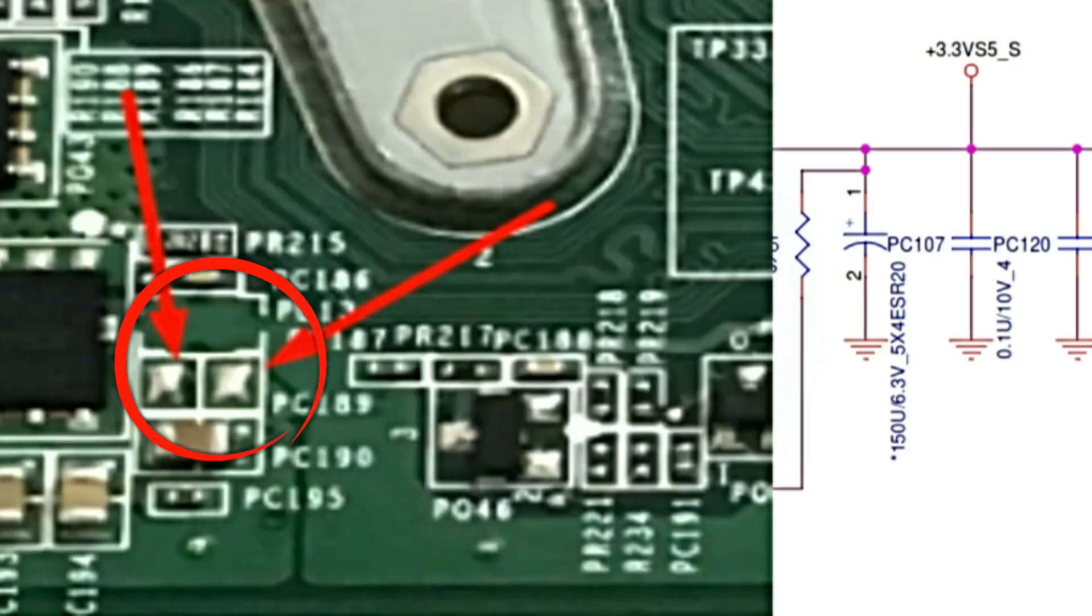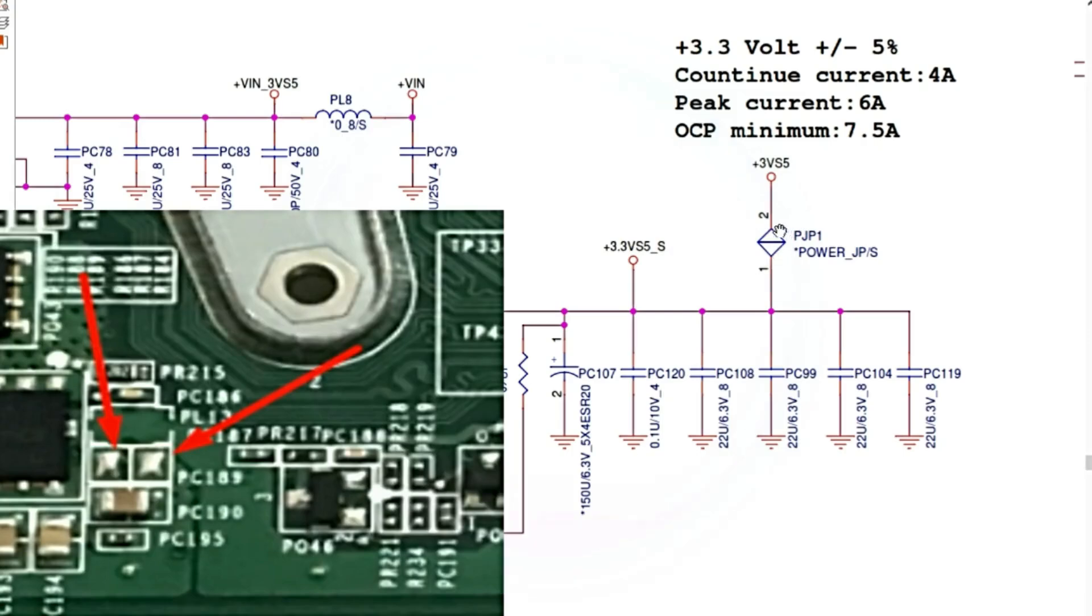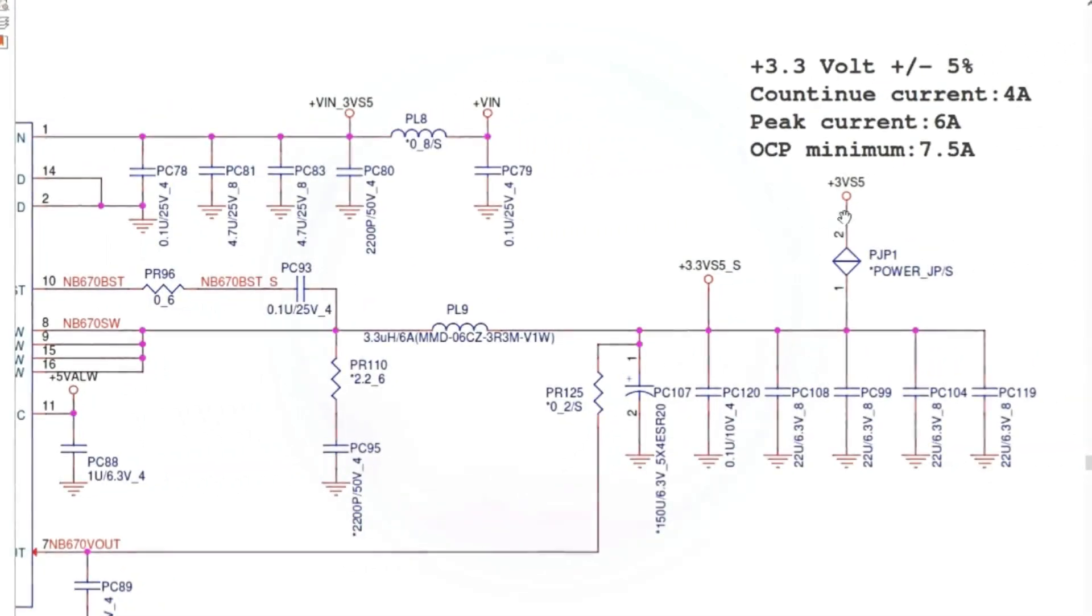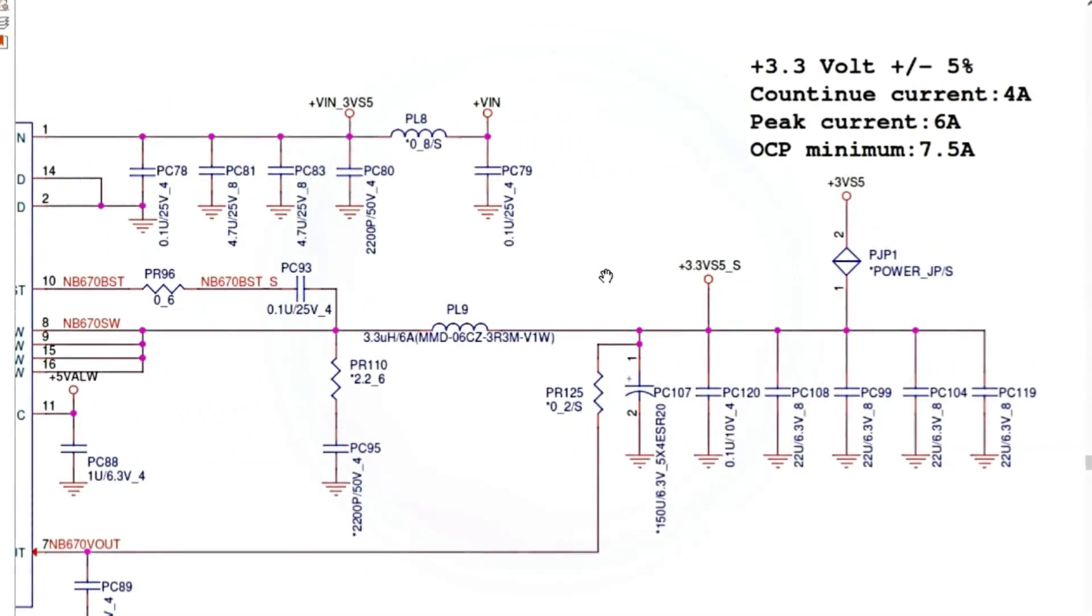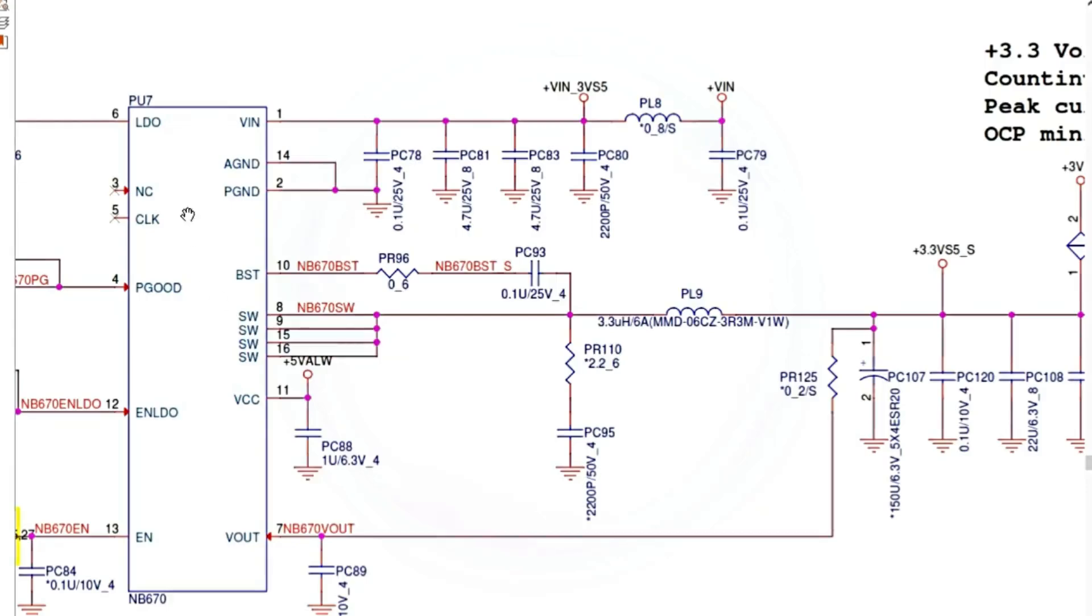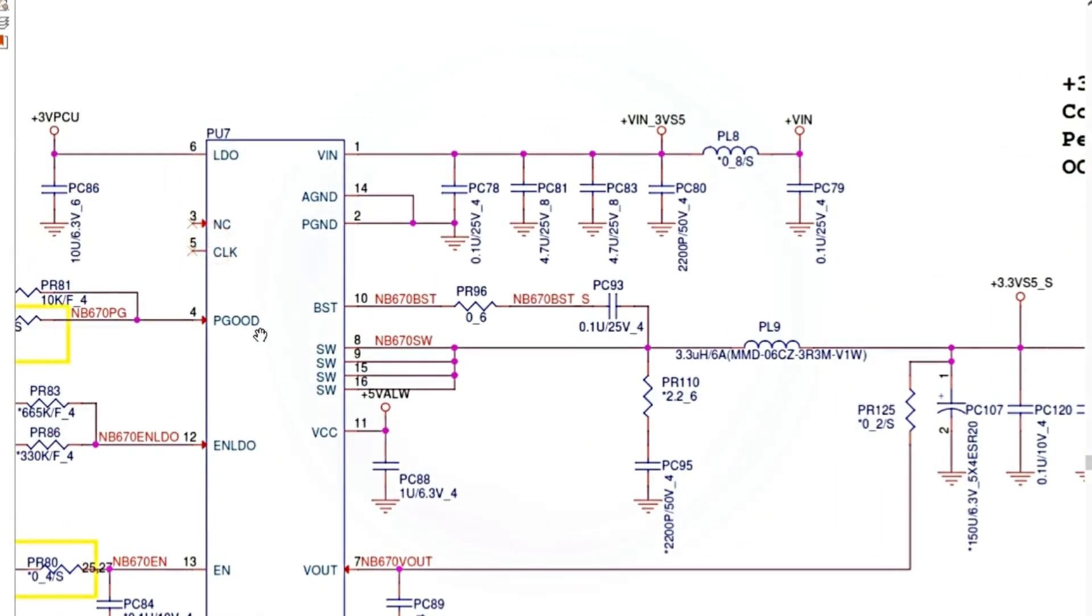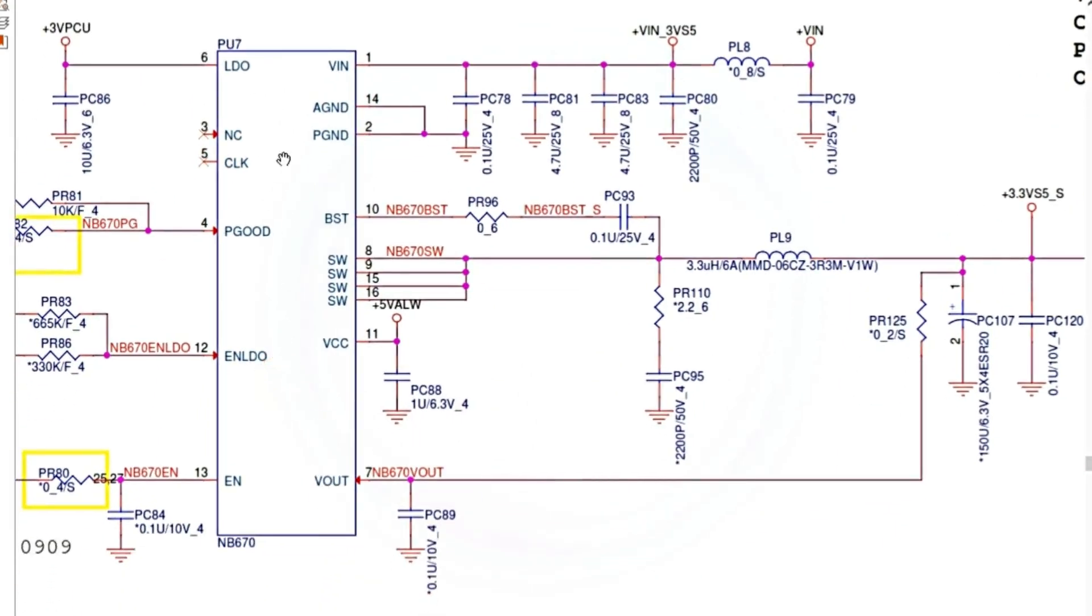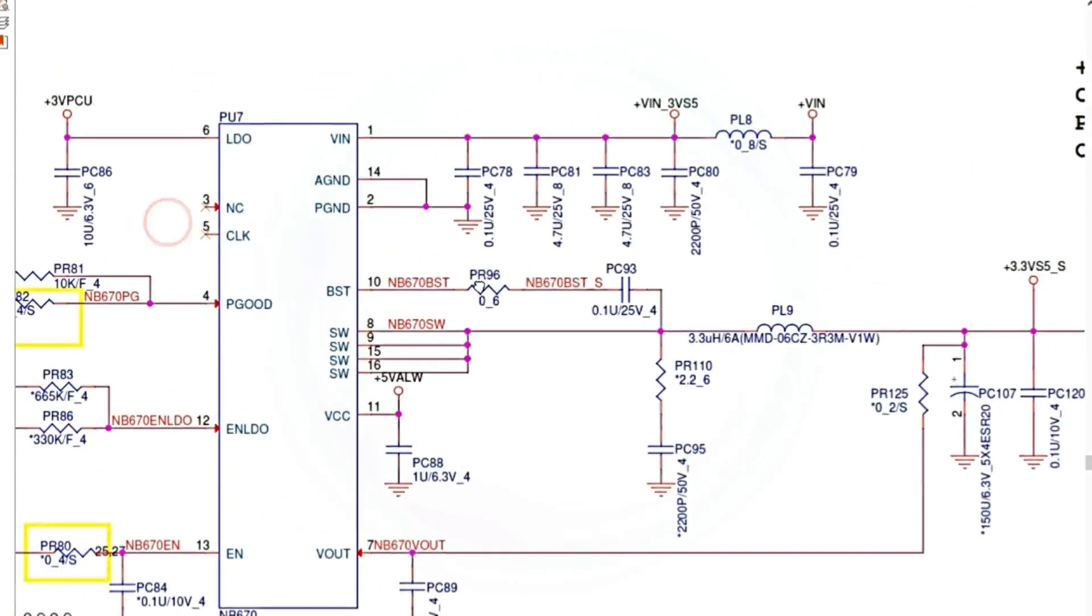In order to get these 3 volts, we need some inputs because the 3 volts here is the output, is the last signal that we will get, or the final signal. But first, normally, we should get many inputs, especially this IC should get many inputs in order to be able to generate the 3 volts.